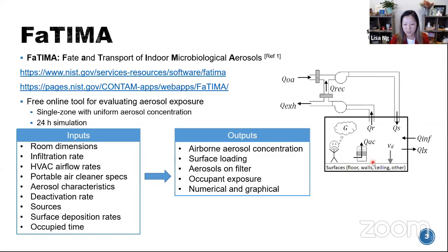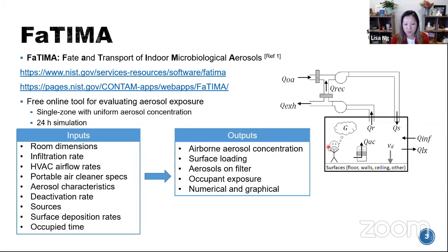You can also input aerosol characteristics such as size and density. A deactivation rate is available — for example if using UVGI or natural decay. A source can be specified — it can be continuous like breathing or talking, or burst such as a cough or sneeze. Surface deposition can be defined for floor, wall, ceiling, and other surfaces: if you had a room full of desks you could have more surface deposition, otherwise you could leave that value at zero. Finally, the occupied time: the source can be generated on a schedule, and the occupied time can be put on a different schedule — both are constant or intermittent within the 24-hour period.